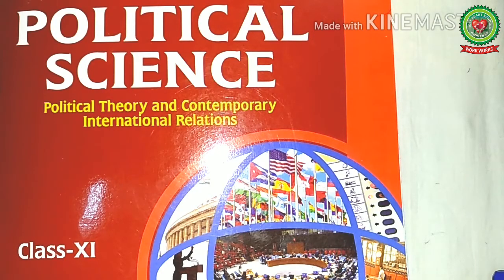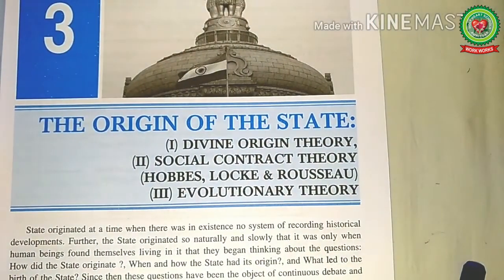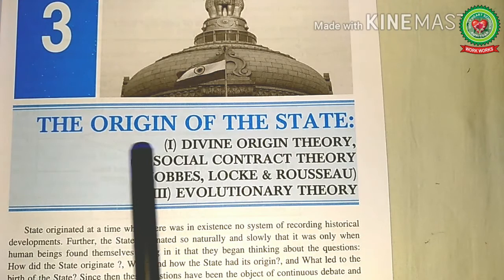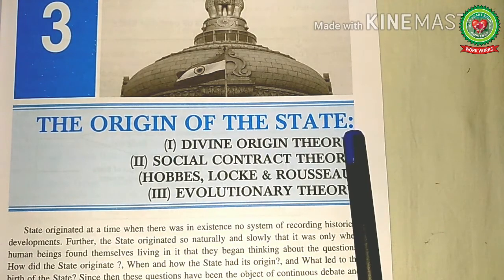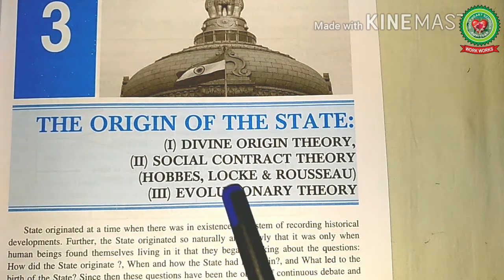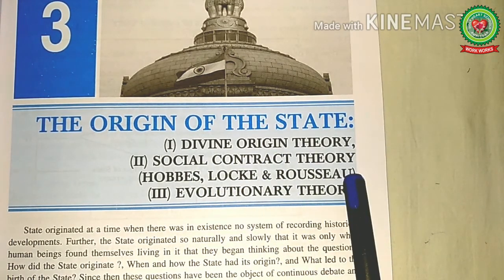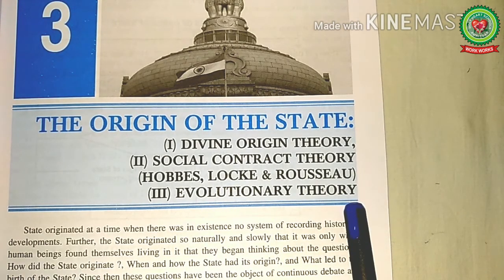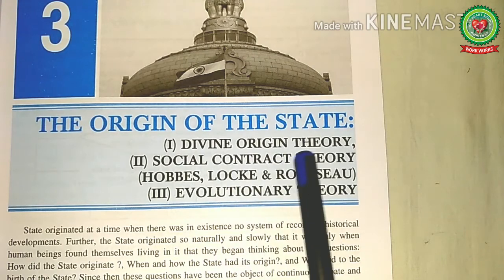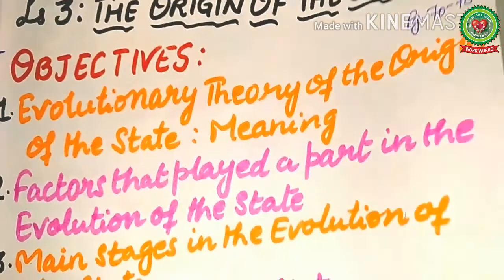Hello students, welcome to Class 1 Political Science class. Today I will continue the discussion of Lesson 3: The Origin of the State. This chapter has three theories of the origin of the state — divine origin theory, social contract theory, and evolutionary theory. I have already discussed divine origin theory and social contract theory with you.